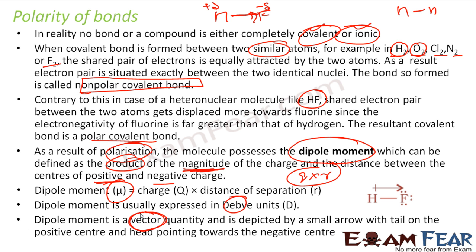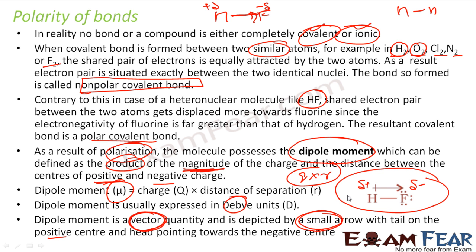Please note, dipole moment is a vector quantity. It is represented by a small arrow with the tail on the positive center. In the case of HF, Hydrogen has a partial positive charge and Fluorine gets a slightly negative charge because Fluorine attracts electrons more than Hydrogen — the electrons spend more time with Fluorine. So the tail is towards the positive charge and the head points towards the negative charge.